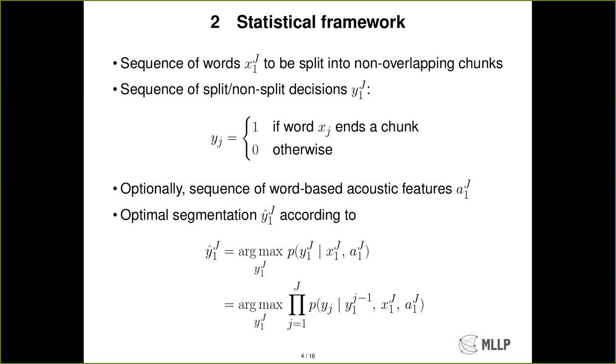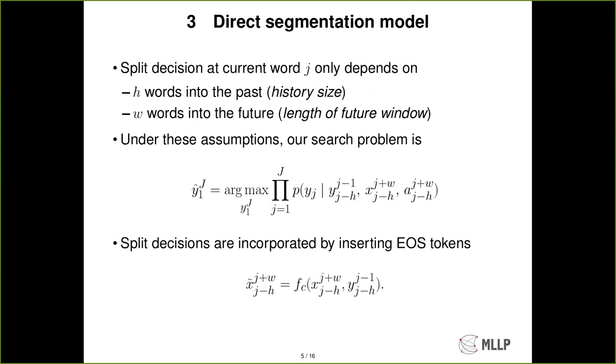And then under this framework we define the optimal segmentation. We apply the chain rule, and moving from this general framework we are going to make a couple of assumptions. We will carry out a split based only on local information. So at current word j the split decision depends on the previous h words, the history, and the following w words, the future window. Then carrying out these assumptions we modify our search problem. And the way that we are going to incorporate the information of the splits is to construct a new input stream that when we have a split decision we will just insert an end of sentence token.